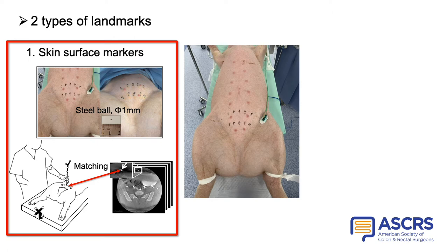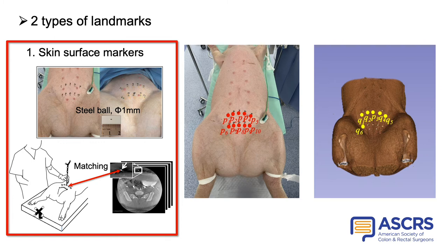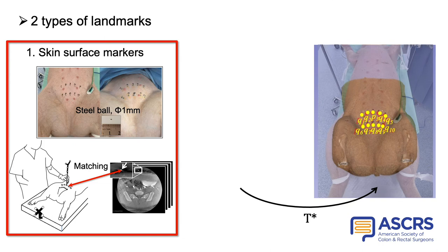In the method involving skin surface markers, ten radio-opaque metallic beads were fixed to the skin surface during the preoperative CT imaging. In the operating room, after the induction of general anaesthesia and head-down positioning, we pointed to the ten skin surface markers using the pointer tool to register the landmarks. Then, the corresponding skin surface markers on the CT images were registered. Registration was performed by matching these markers between the patient and the CT images.